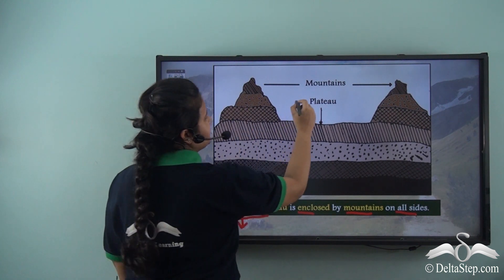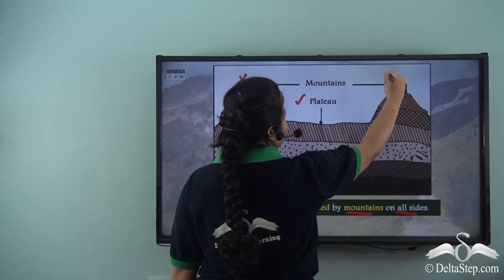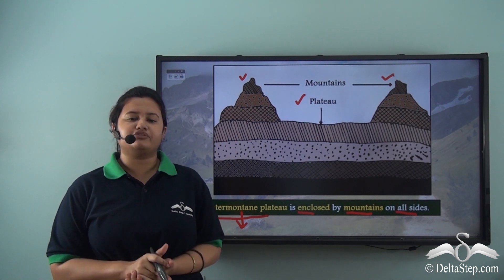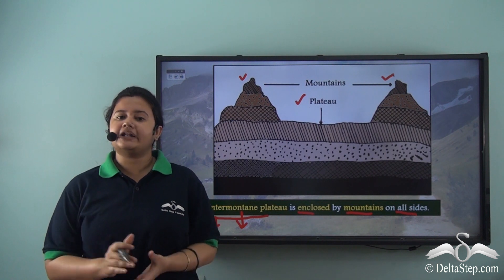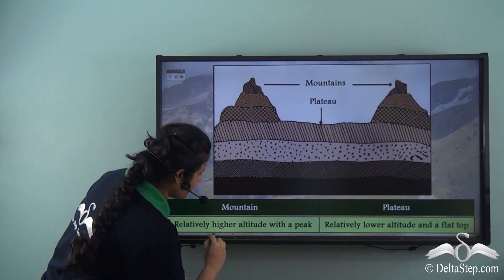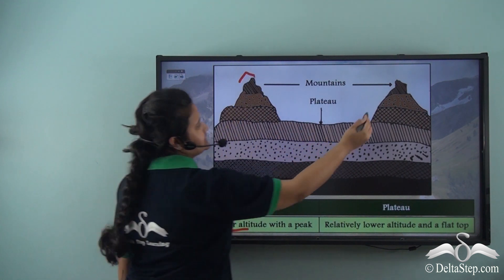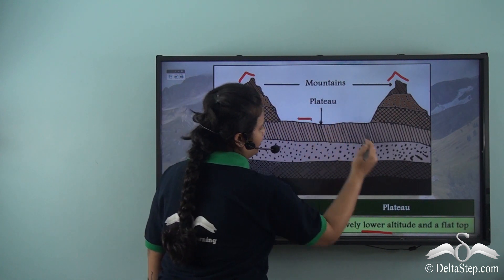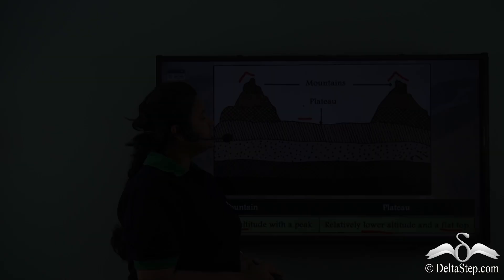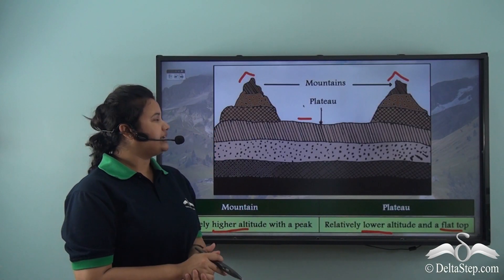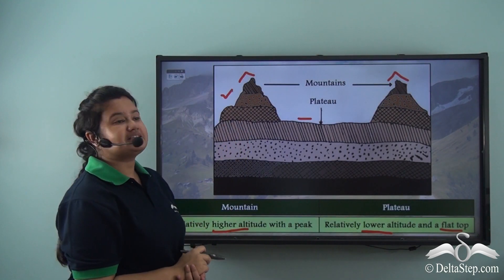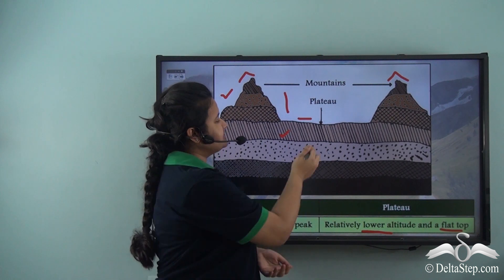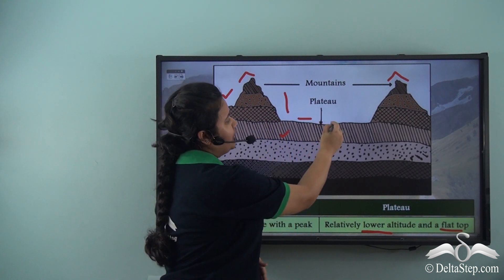In this image we can see that a plateau is located between two mountain ranges. We can also see that a mountain is quite different from a plateau. A mountain has a relatively higher altitude and a peak or summit, while a plateau has a relatively lower altitude and a flat top. In this image, this landform is a mountain with higher elevation and a peak, and this part is a plateau with a relatively lower elevation and a flat top.